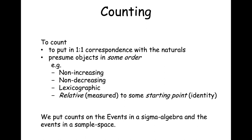To count is to put a one-to-one correspondence with a set of natural numbers, assuming some ordering — maybe non-increasing, non-decreasing, lexicographic, or relative to some starting point. We order objects and draw that correspondence. We put counts on events in a sigma algebra, and the events in the sample space help determine the cardinality of the sigma algebra — how rich it is.